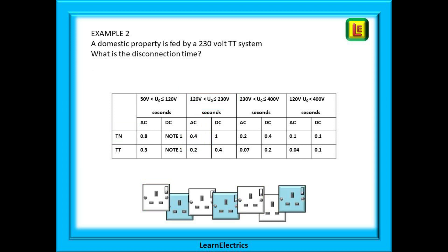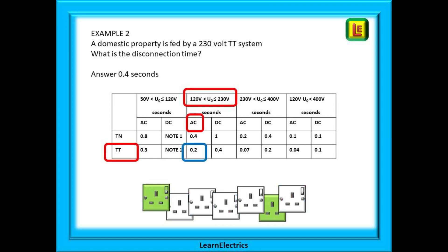Example 2 is another domestic property but this time a TT system. Choose the row TT, choose the voltage range 120 to 230 again, AC again, and where the two cross is our answer — the disconnection time is 0.2 seconds.